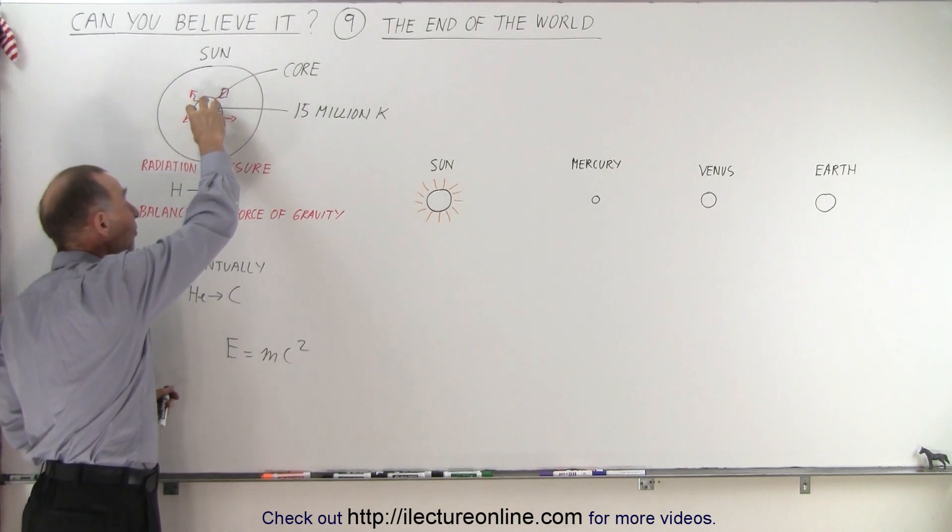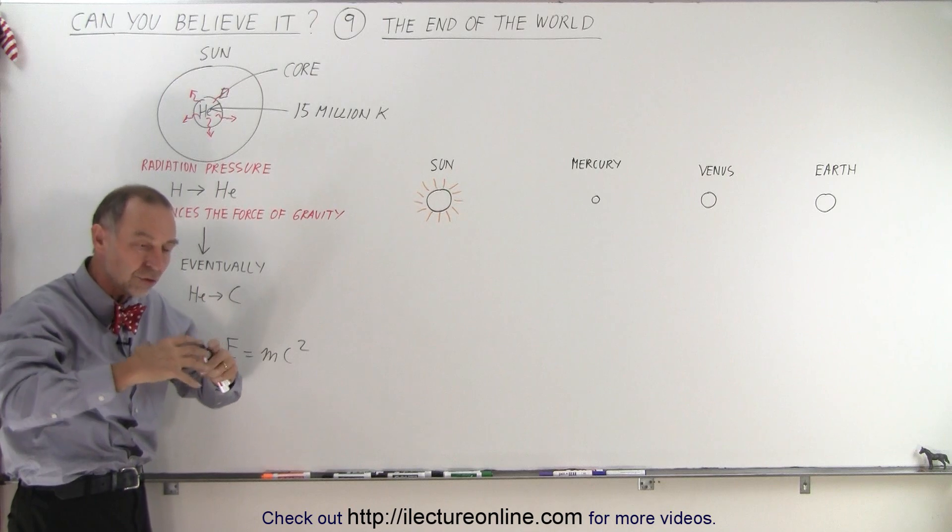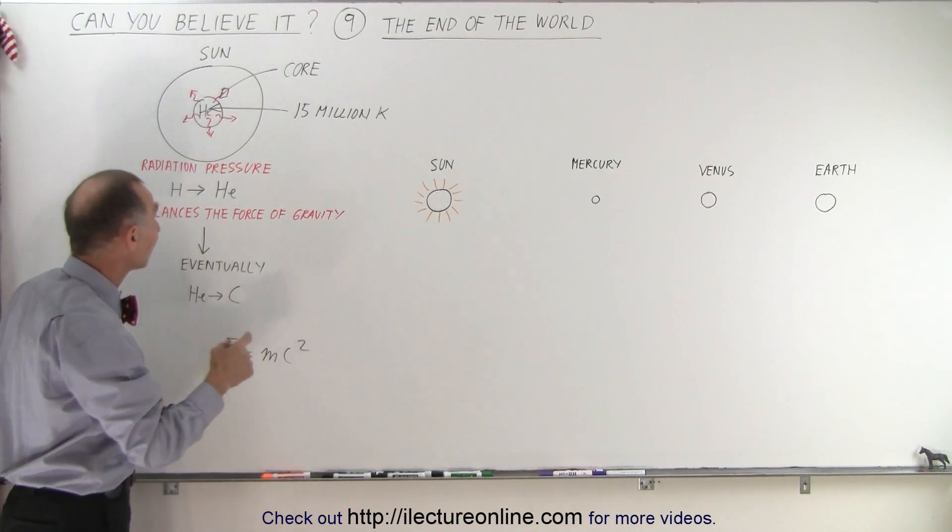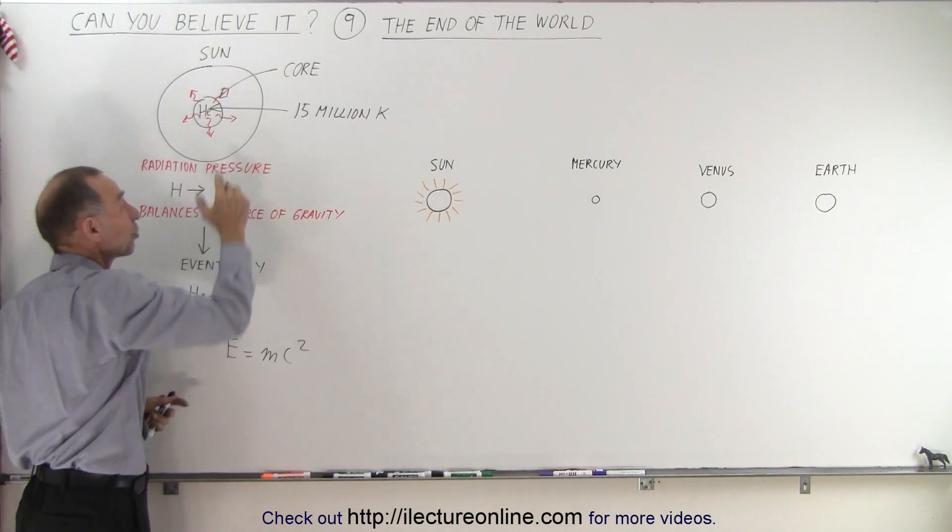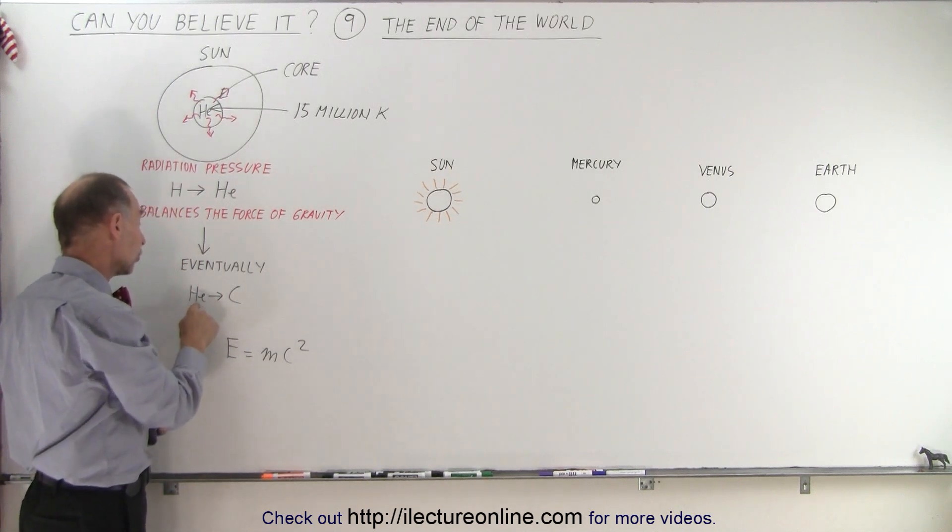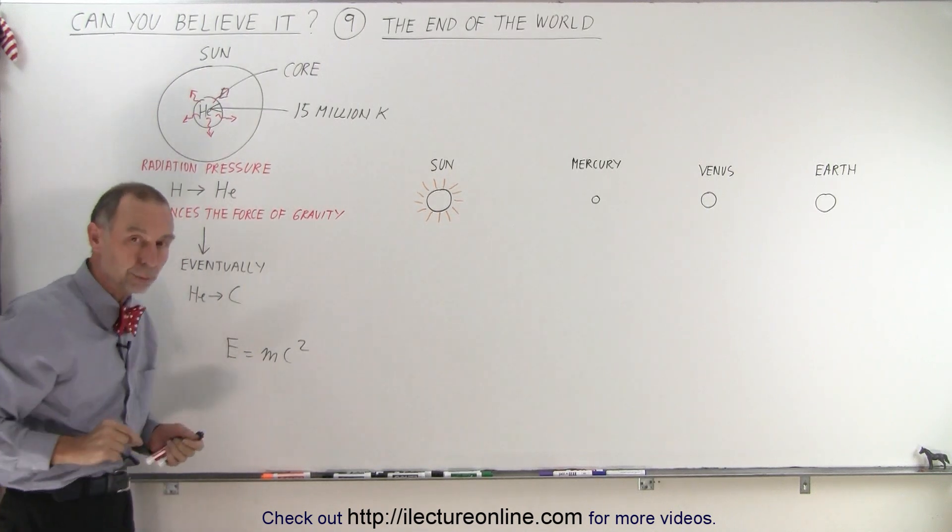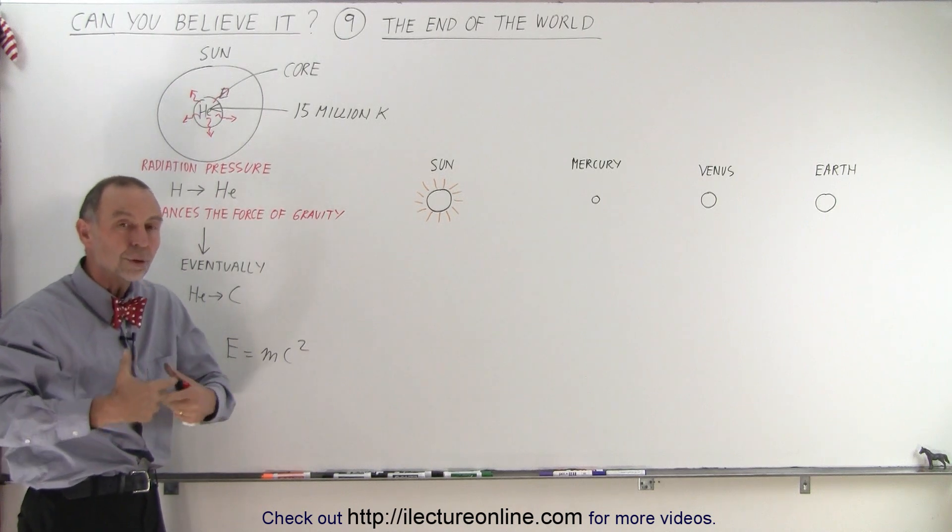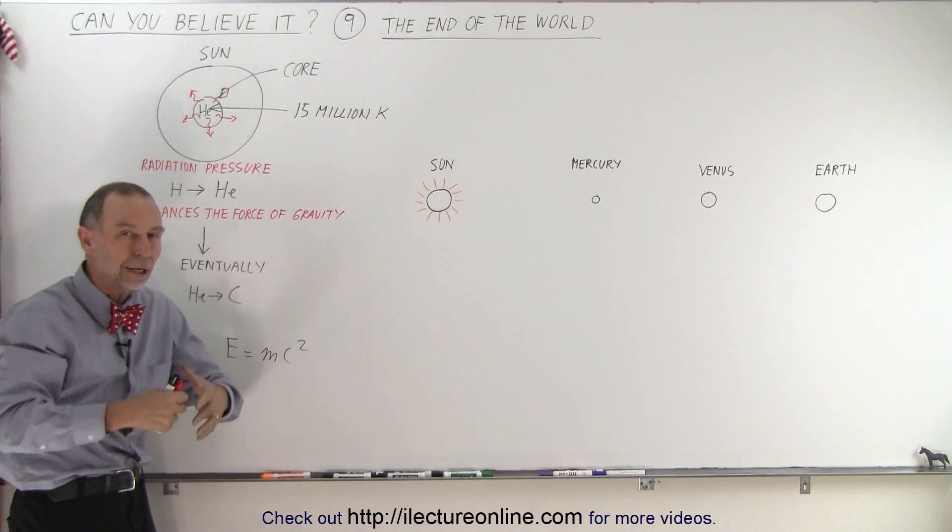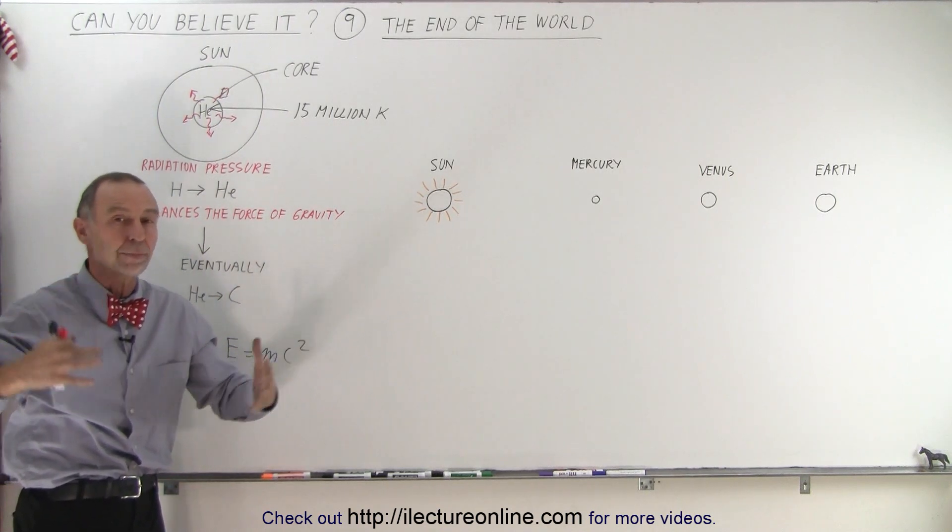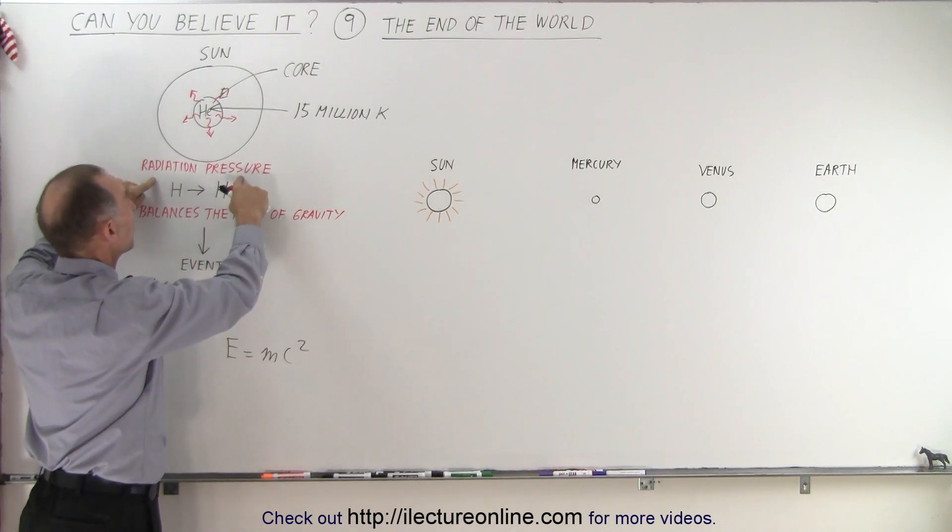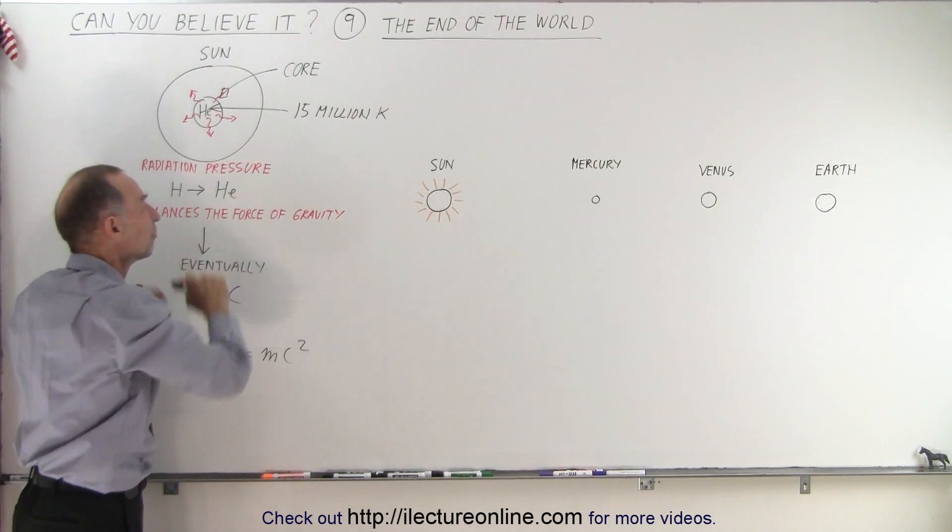Well the core collapsing due to gravitational forces will continue to add additional energy to the core. The core will get hotter and hotter. And eventually the core will reach a temperature of about a hundred million degrees. When it does it will begin to turn helium into carbon. Well when that happens an enormous amount of energy more so than before will be created in the core and an enormous amount of radiation will be produced increasing the radiation pressure. And now the radiation pressure will become larger than the force of gravity.